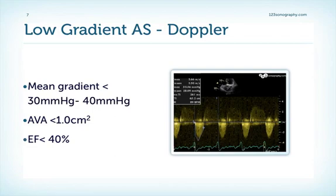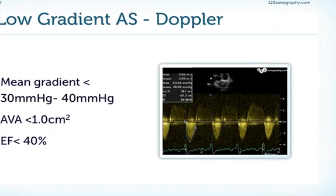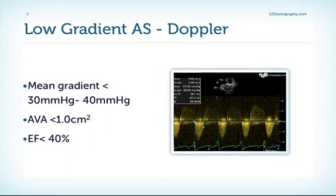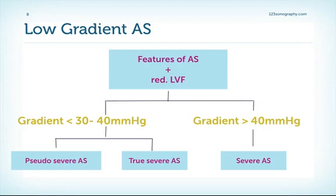We will have a mean gradient of 30 to 40 millimeters mercury with a low AV velocity. Look here on the right — the AV velocity is only 3.6 meters per second. In the calculation, we will have a valve area below one. And if we do a Simpson's ejection fraction, we will have an EF below 40%. So in low gradient, low flow aortic stenosis, we will have features of severe aortic stenosis with a valve area below one and a reduced left ventricular function.